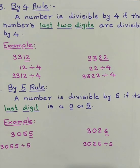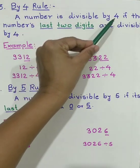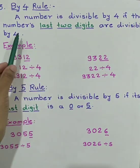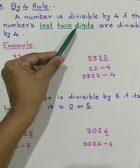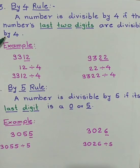Next one is by 4 rule. Rule says, a number is divisible by 4 if the numbers last two digits are divisible by 4.